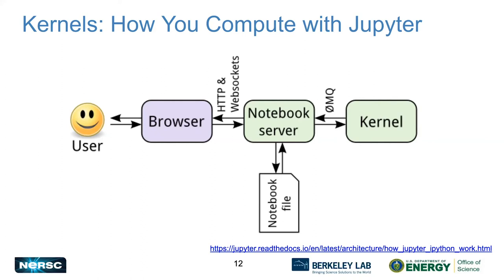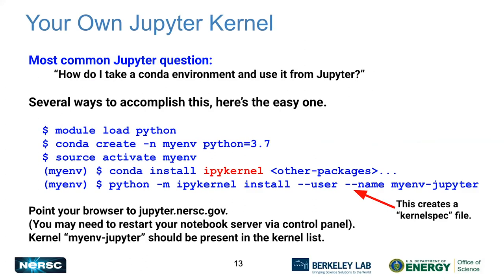The number one question we get about Jupyter at NERSC is: how do I take a conda environment and use it from Jupyter? The best approach is: create your conda environment with whatever you need, then add the package called ipykernel. Once installed, run the ipykernel install command, which creates a kernel spec — a special JSON file dropped in your home directory under `.local/share/jupyter/kernels/` — and your conda environment will show up in the list of kernels available on jupyter.nersc.gov.